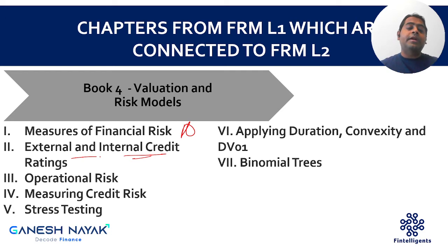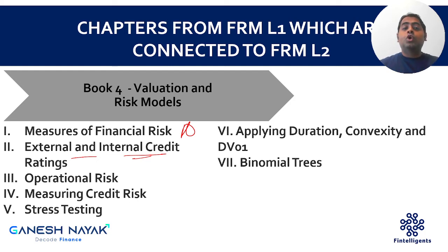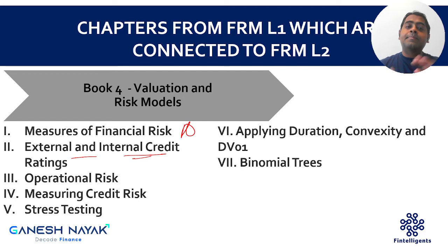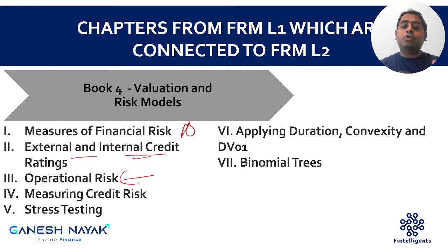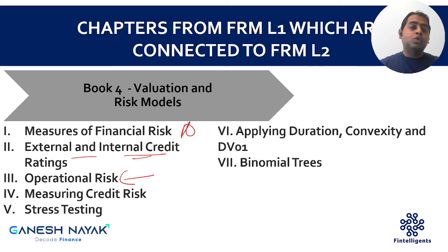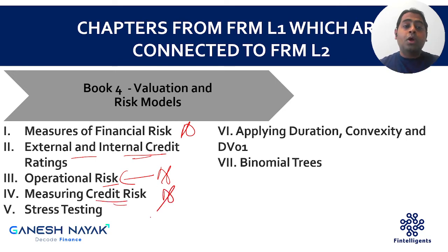Internal and External Credit Ratings — there is a specific chapter on rating assignment methodology covering how rating agencies create models and rating transition matrices, which will be repeated in Level 2. Operational Risk — there is a specific book with around 25 chapters on operational risk, so reading this chapter helps you connect back to many things across those 25 chapters. Do not miss the Operational Risk chapter.